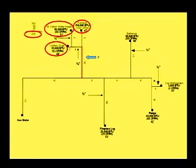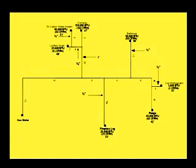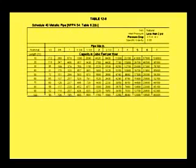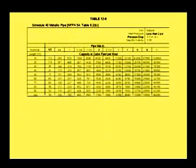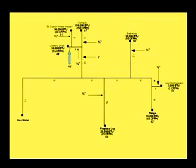Now that we have sized the branch main line, we can change rows based on the distance the last two appliances are from the meter. The 5-foot section supplying the furnace is 47 feet from the meter with a demand of 150 cubic feet per hour. Refer to table 12-8, 50-foot row — 150 fits under 151 — and see that a 3/4-inch pipe will accommodate the furnace. The 2-foot section for the clothes dryer is 48 feet from the meter and has a demand of 35 cubic feet per hour. Refer to table 12-8, 50-foot row — 35 will fit under 72 — and see that a 1/2-inch pipe will accommodate the 35 cubic feet per hour demand for the clothes dryer.